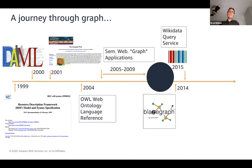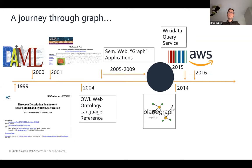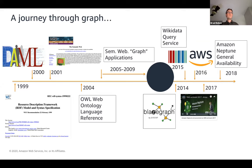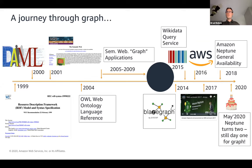I noticed a marked change in how people thought about this space — talking about graph applications more than just RDF and SPARQL applications. In 2015, the Wikimedia Foundation was looking to expose the structured data they maintained through the Wikidata Query Service. They looked across both property graph and RDF spaces and ended up choosing Blaze Graph. In 2016, I joined AWS. In 2017, we announced the preview of Amazon Neptune. In 2018, general availability. And now in May 2020, Neptune is turning two — and in the Amazon spirit, it's still day one for graph.